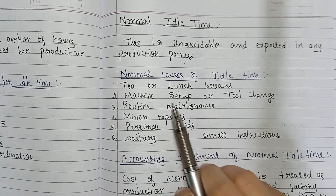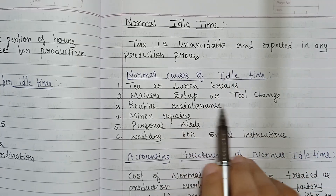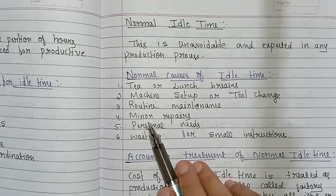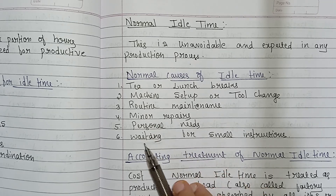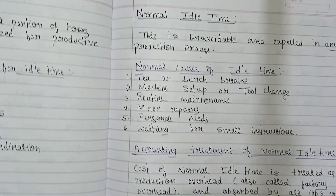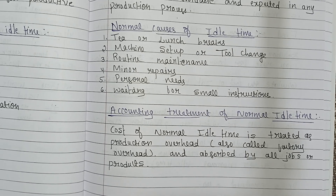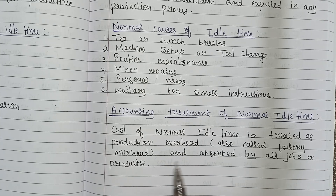So the normal causes of normal idle time are: tea or lunch breaks, machine setup or tool change, routine maintenance, minor repairs, personal needs, and waiting for small instructions. The accounting treatment of normal idle time: the cost of normal idle time is treated as production overhead — also called factory overhead — and absorbed by all jobs or products.